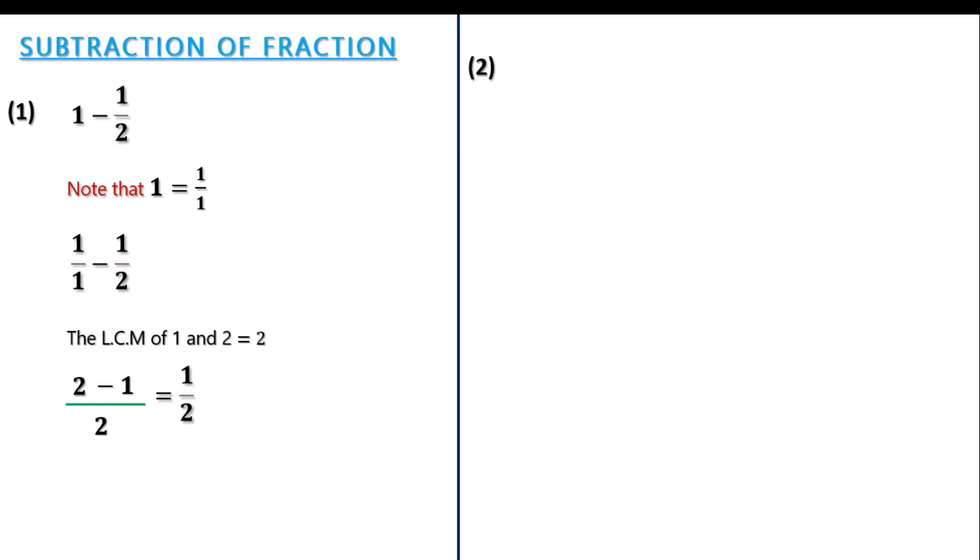This is how to subtract 2 fractions from each other. Let's take a look at the second example here. You are asked to subtract 3 whole number 5 over 8 minus 1 whole number 3 over 8. The first step is you will notice that these two fractions are not in their original form. The first thing to do is to change to its original improper fraction.